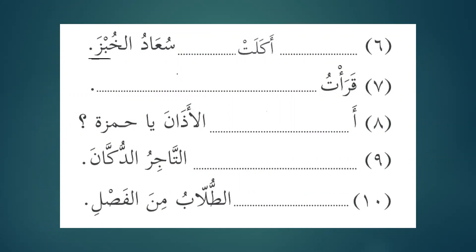Qara'atu — you can put anything: qara'atu al-kitaba, qara'atu al-Qur'ana, or al-mujallata — whatever you read. You have to make sure the maf'ool is always mansoob. In qara'atu, 'tu' is the subject and qara'a is the verb. If we don't have form number one or form number four of the verb, then after that the noun will always be mansoob.